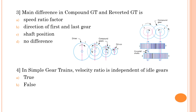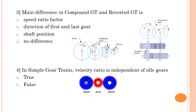Fourth question: in a simple gear train, velocity ratio is independent of the idler gear — true or false? Consider a simple gear train with an idler gear, and apply the velocity ratio formula for this gear train.